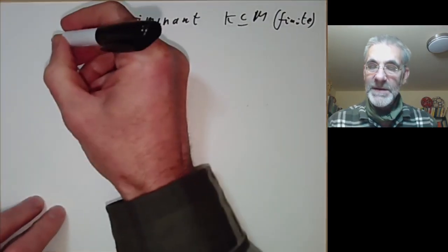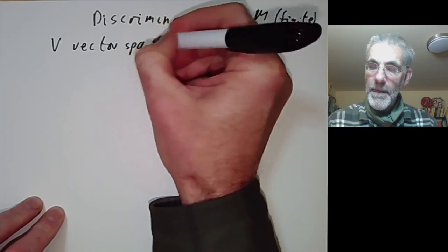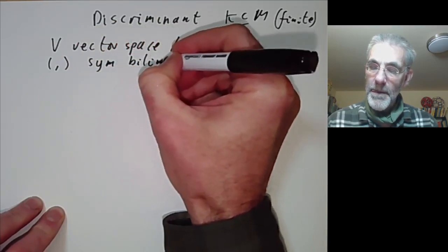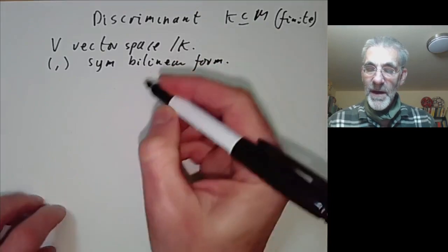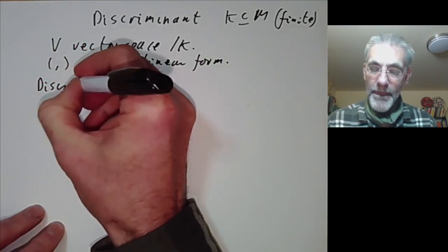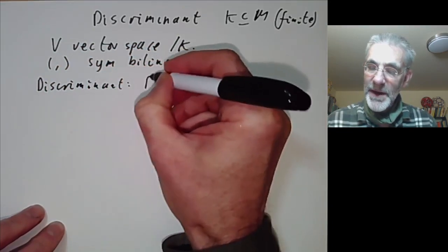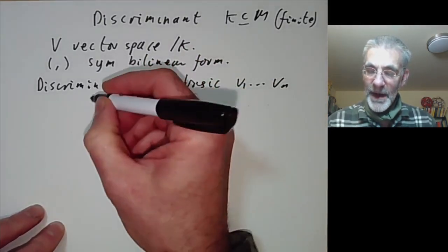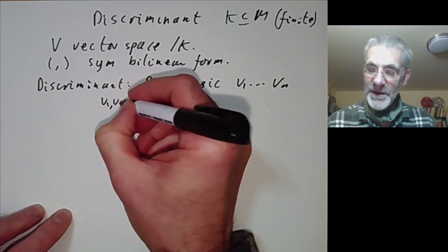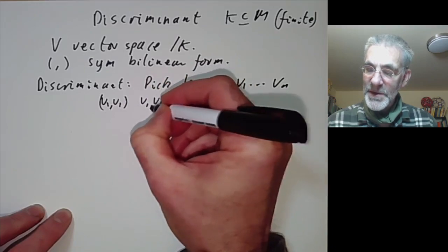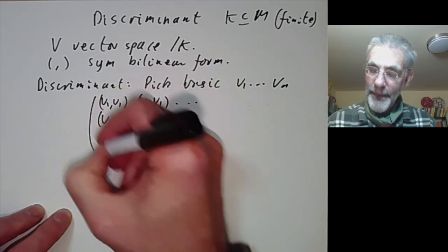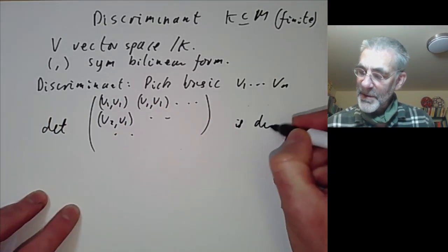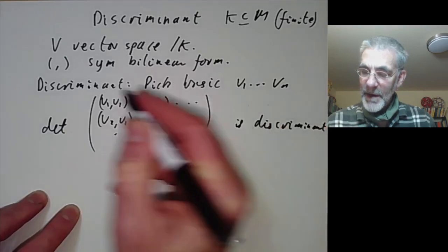We first recall that if V is a vector space over k, again finite dimensional, suppose it has a symmetric bilinear form. Then we can define the discriminant of this form as follows: we pick a basis v1 up to vn of V and look at the matrix whose entries are all the inner products v1,v1; v1,v2; v2,v1 and so on. The determinant of this matrix is called the discriminant of the bilinear form.